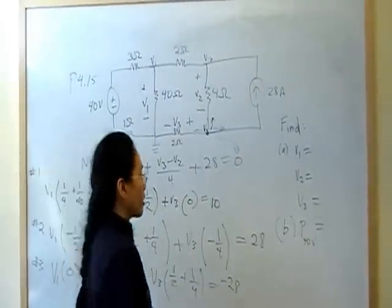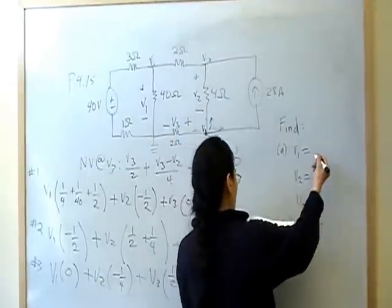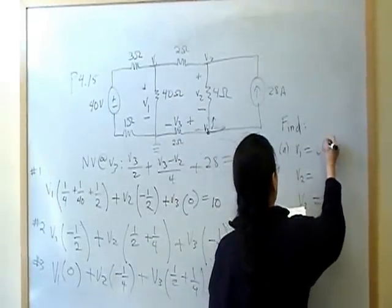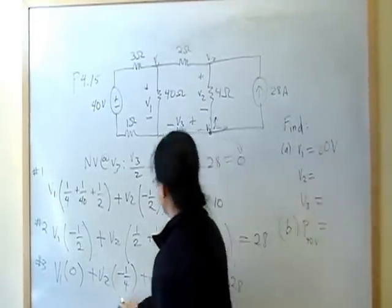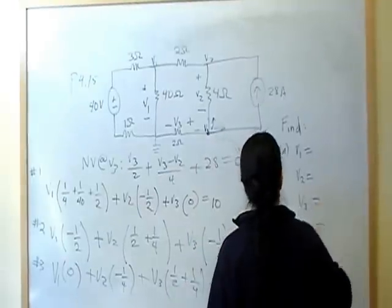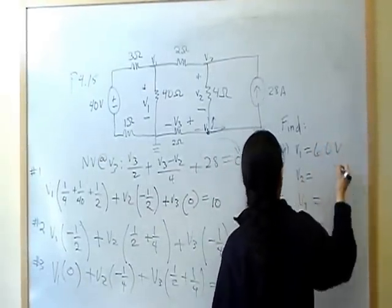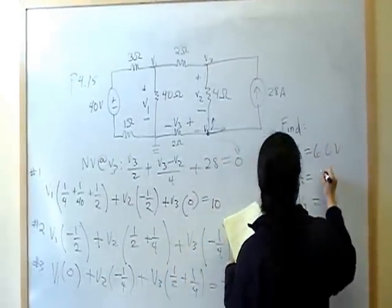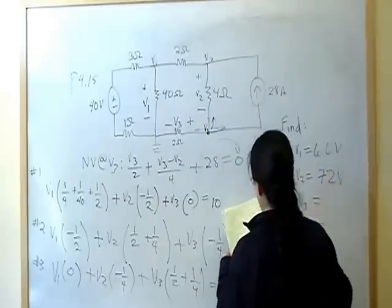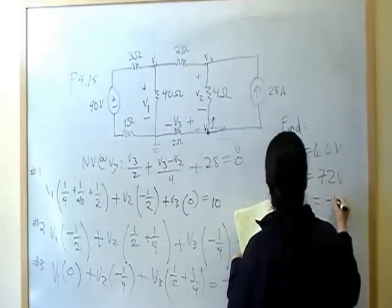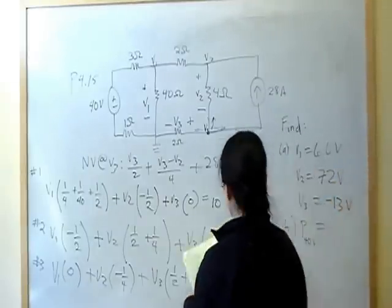V1 is 60 volts. V2 is a 72 voltage drop. And V3 is negative 13 volts.